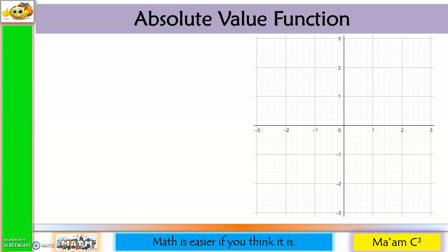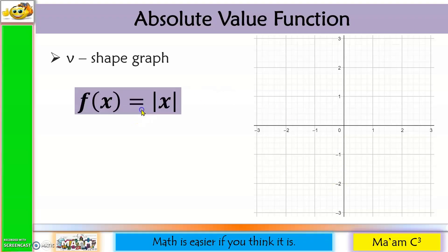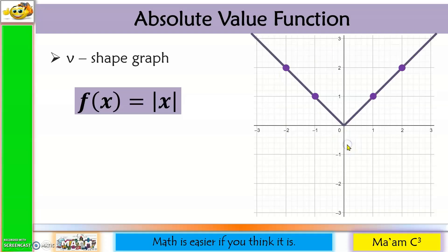Next is the absolute value function, which has a V-shaped graph. The parent function is f(x) = |x|. Whatever is your x, take its absolute value and that will be your y. For example, |1| = 1, |-1| = 1, |2| = 2, |-2| = 2. This parent function has a vertex that passes through (0, 0).